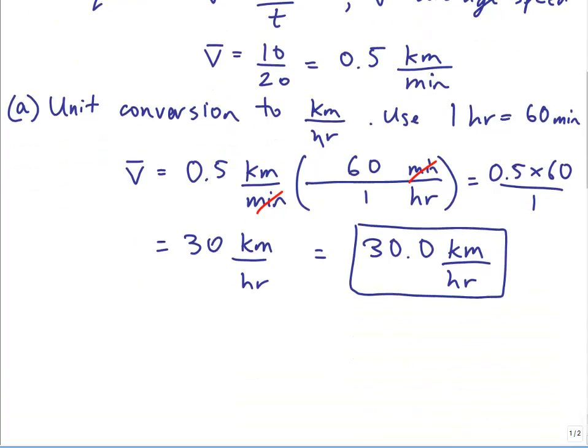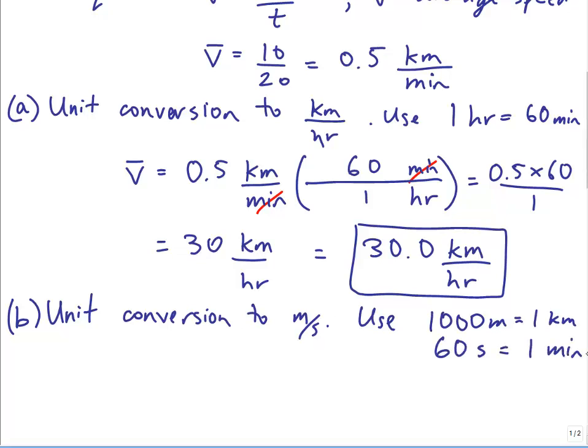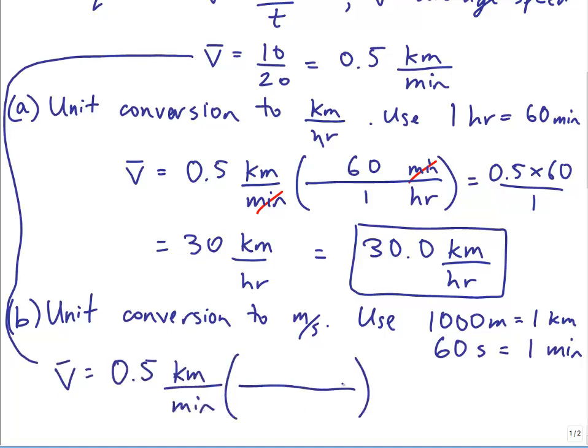Part B is another unit conversion to meters per second. We'll use the fact that 1,000 meters is one kilometer, and 60 seconds is one minute. And we'll start all the way from the top there, the 0.5 kilometers per minute. I'm going to multiply now by two conversion factors.